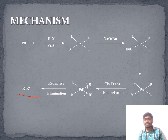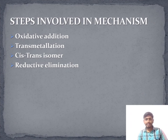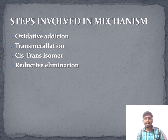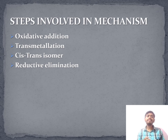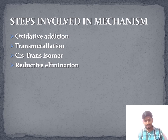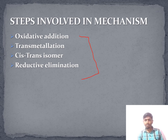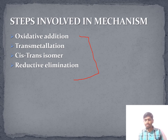Now the steps involved in the mechanism — here is the short trick for Suzuki coupling reactions. There are four steps involved. The first step is oxidative addition. The second is transmetallation. The third is cis-trans isomerization. And the fourth step is reductive elimination. Remember these four steps, as in every coupling reaction these four steps are involved.